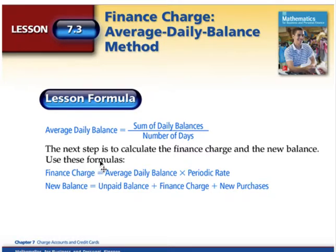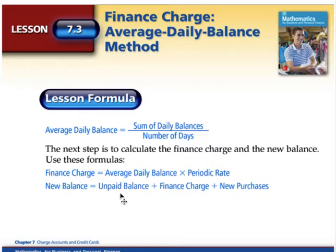This will look just like yesterday's formula. The finance charge — instead of using the unpaid balance — is going to be the average daily balance times the periodic rate. Then to calculate our new balance, we take what was left over from last month, add in the finance charge we just calculated, and add in any new purchases for the month.